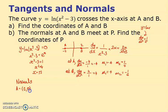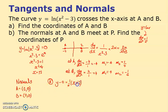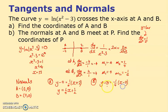Now I can find the normal equations. At A, which is (-2, 0): y - 0 = (1/4)(x - (-2)), giving y = (1/4)x + 1/2. At B, which is (2, 0): y - 0 = (-1/4)(x - 2), giving y = (-1/4)x + 1/2.